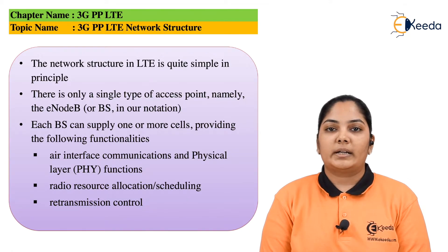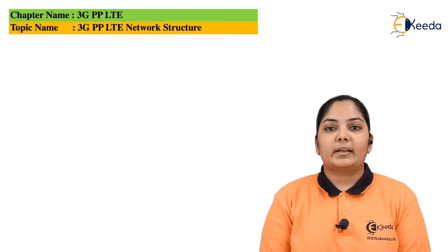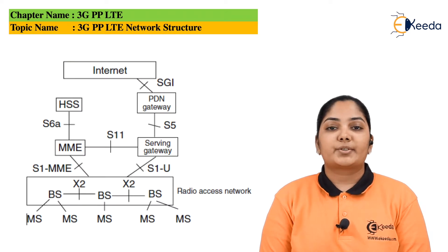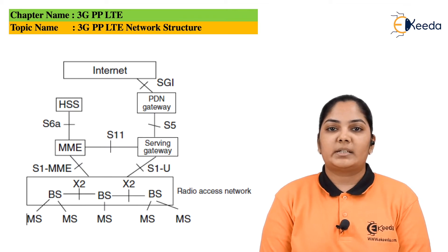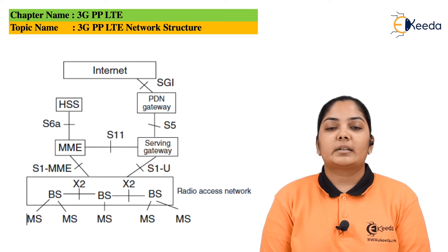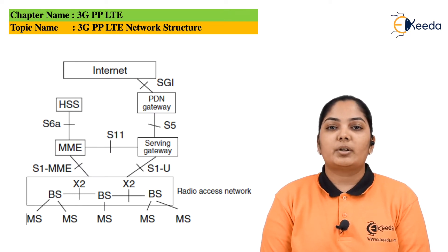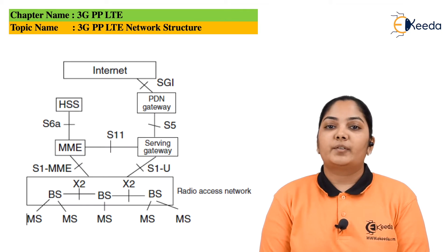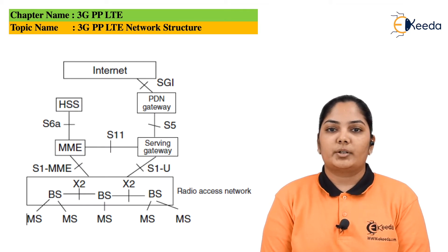This Network Architecture is a simplified version of GSM as well as WCDMA. In the network diagram, at the extreme bottom we can see there are Mobile Stations. All these Mobile Stations are connected to the Base Stations. Multiple Base Stations are connected amongst themselves and the interface between them is called the X2 Interface. The X2 Interface carries information important for coordination of adjacent cells, such as intercell interference reduction.